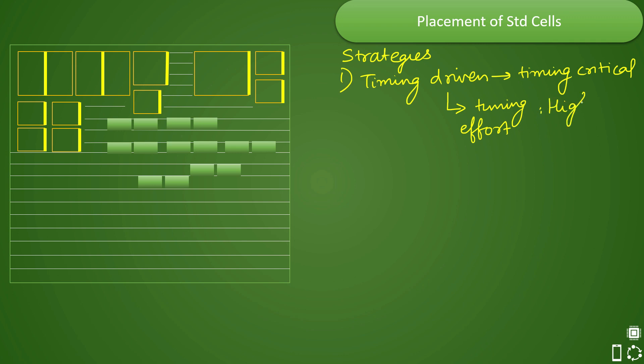If your design is timing critical, you will say that it is having high timing effort so that the tool will put more effort while placing the standard cells. It could also be medium. There are multiple options available and sometimes even low value is available.